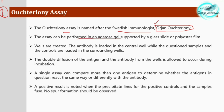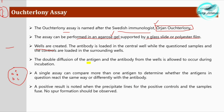This assay is performed in agarose gel supported by a glass slide or polyester film. Wells are punched in the gel. The antibody is loaded in the central well while the question samples are loaded in wells arranged in a circular fashion around it — or vice versa: the sample can be placed in the middle with anti-human, anti-cow, or anti-dog antibodies in the surrounding wells. Double diffusion of antigen and antibody from the wells is allowed to occur during incubation.